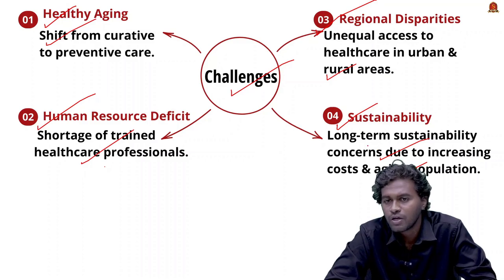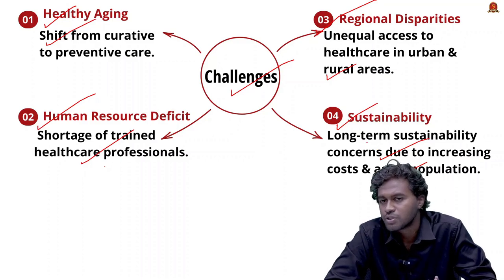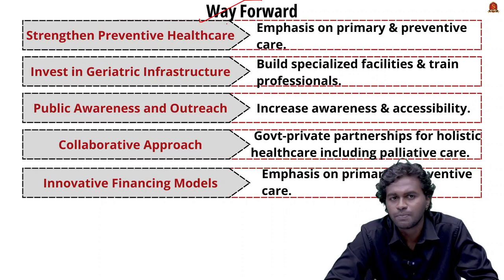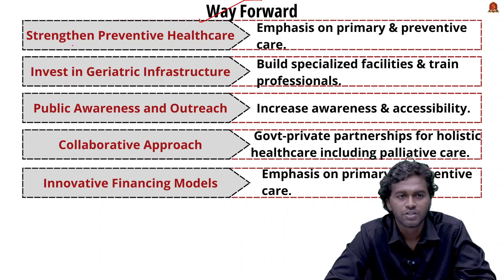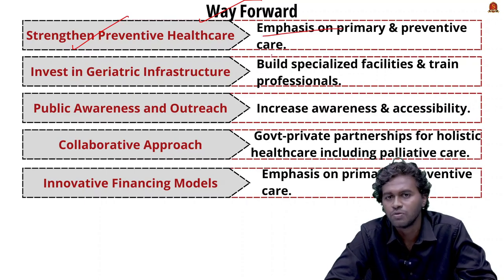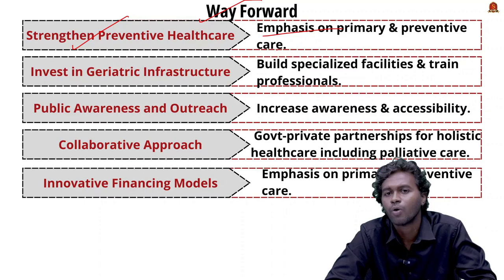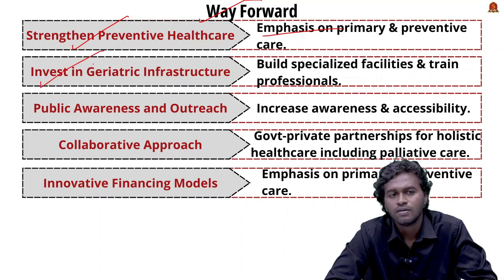The fourth challenge is sustainability — due to increasing healthcare costs and a growing aging population, the long-term sustainability of PM-JAY remains a question. For the way forward, the first step is strengthening preventive healthcare. By emphasizing primary and preventive care, we can reduce the incidence of non-communicable diseases and hospitalizations among the elderly.